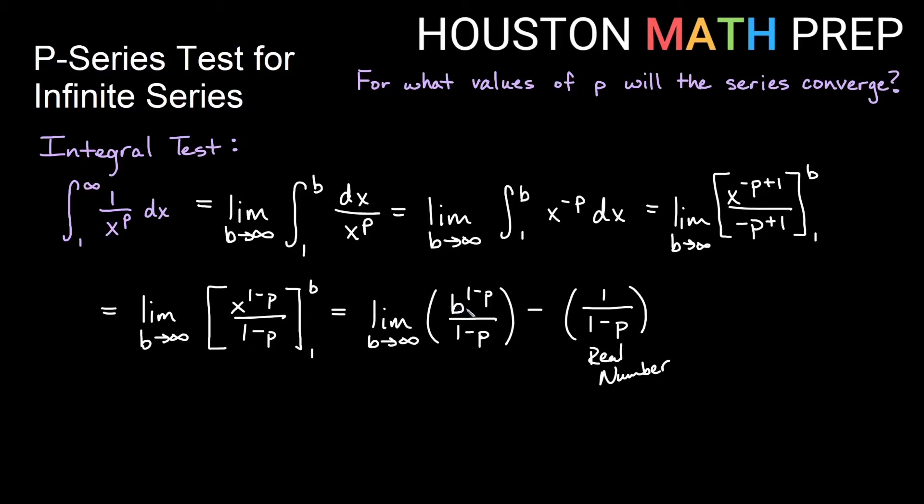So the question is, how could we make b be in the denominator? That means I would need a negative power of b. In other words, I would need my exponent 1 minus p to be a negative number. In math, we mean 1 minus p should be less than 0. If I add p to both sides, I get that 1 needs to be less than p, or p needs to be greater than 1. So as long as the power is greater than 1, this integral will converge, and the original series will converge as well. We have our answer for our shortcut.